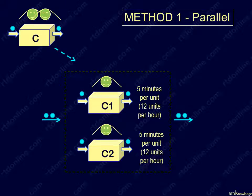Let's examine the first method. Here you set up a second workstation that's exactly the same as station C. Each one, let's call them station C1 and C2, will have an operator and a 5-minute cycle time.